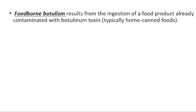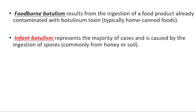We have three types of botulism. The first one is foodborne, which results from the ingestion of a food product already contaminated with botulinum toxin — typically home-canned foods. The second and most common one is infant botulism; this type involves spores found in honey or soil and affects infants. The third one is wound botulism, which affects IV drug users.